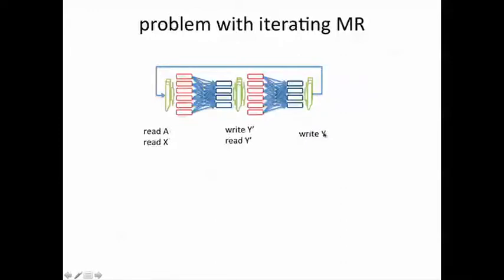But now you have to once again read the matrix A and the y's that you've written in the previous iteration, write y prime, write y again, and continuously read A again and read y. So there are two places where you're reading things again and again.